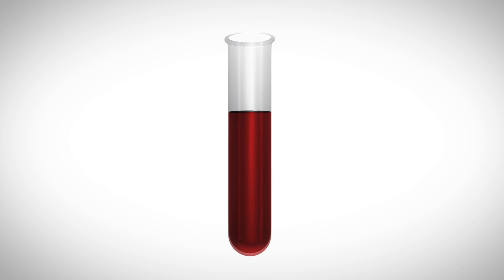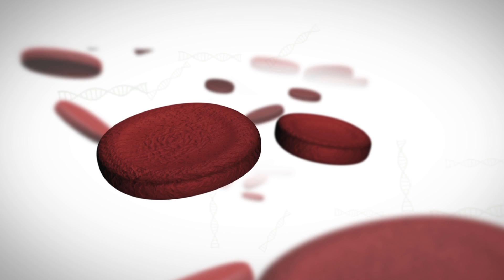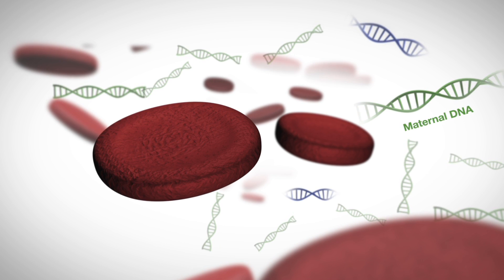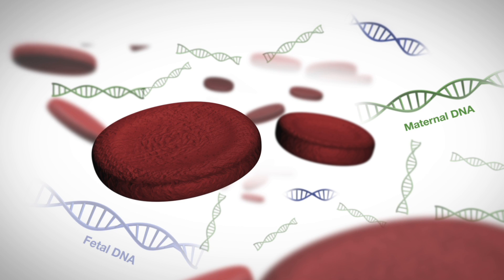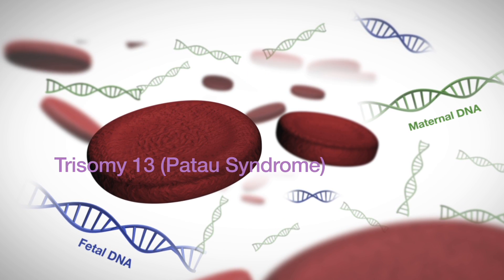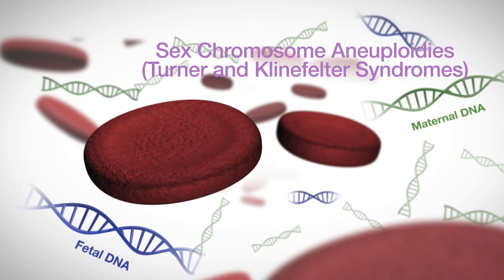NIPT leverages fetal cell-free DNA released by placental cells during pregnancy into the maternal bloodstream, using a specialized tube that prevents cells from breaking down and obscuring the fetal cell-free DNA. It can provide information about selected chromosomal abnormalities in the fetus, including trisomies 21, 18, 13, and sex chromosome aneuploidies.